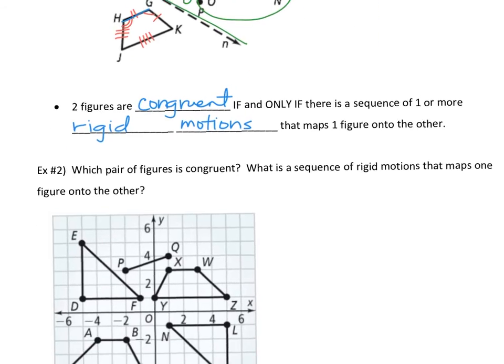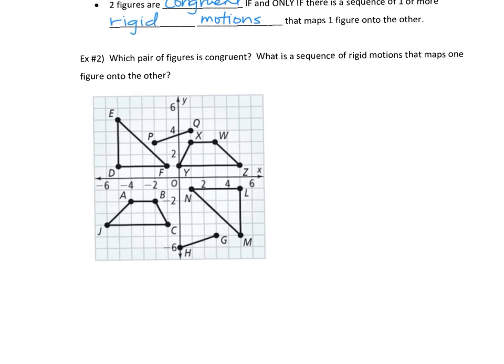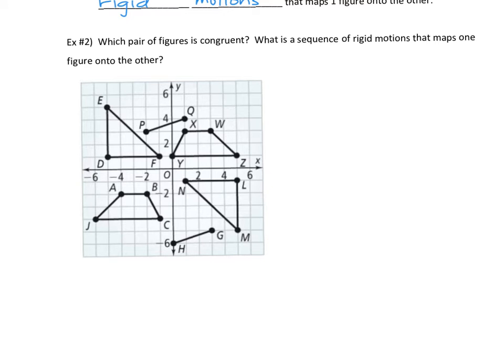Okay, so let's look at this picture. I want to know which pairs of figures are congruent and what is the sequence of rigid motions that maps one onto the other. Now, there are multiple ways you can do this because they don't tell you which figure is the starting, your pre-image, and which one's the image, your ending figure. So you might get a totally different answer than your neighbor and that would be okay.